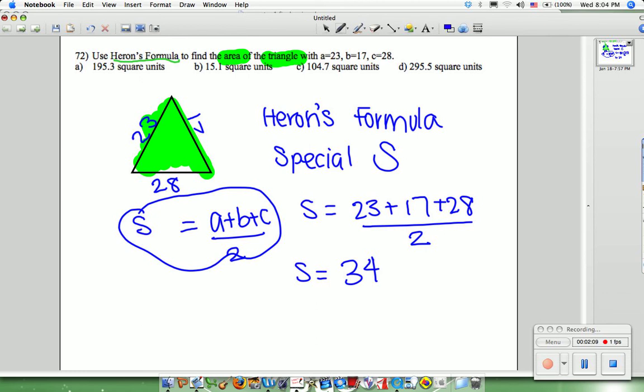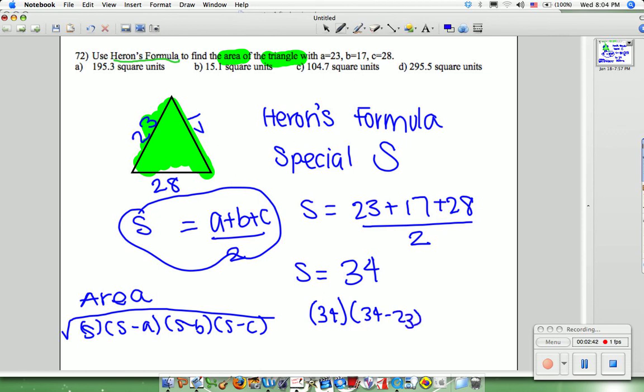Now we're going to use S to find the area. The formula for area is the square root of S times S minus A times S minus B times S minus C. So we're going to take 34 multiplied by 34 minus 23, multiplied by 34 minus 17, and multiplied by 34 minus 28, all under the square root.